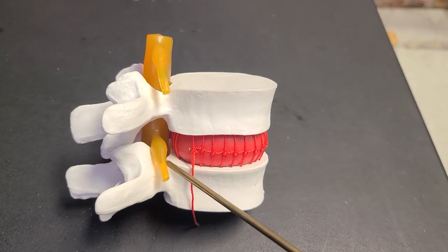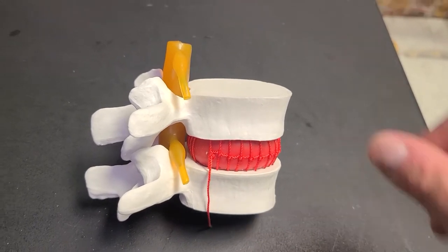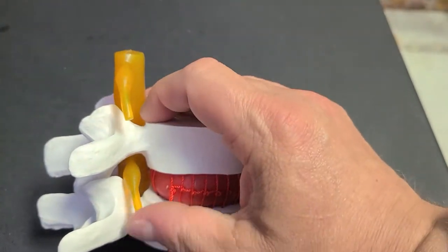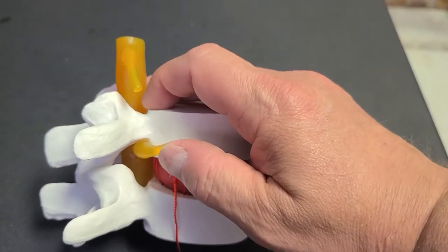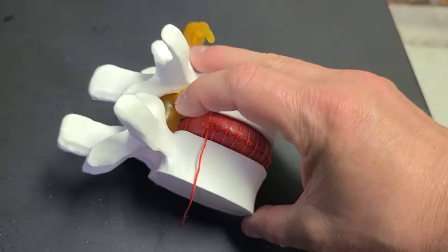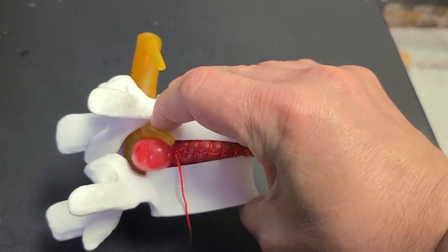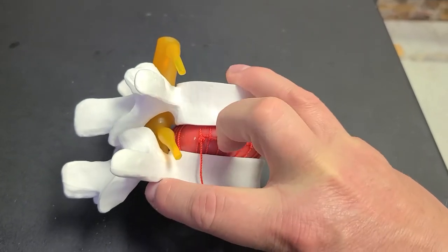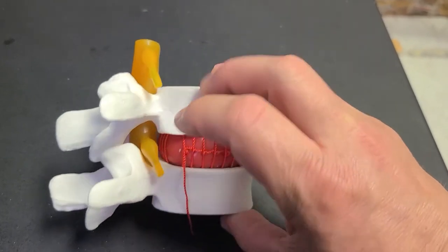If this is the nerve that's exiting at this level, in real life, these nerves exit near the top of that intervertebral foramen. So when it exits, this herniation doesn't really affect it as much as it affects the next nerve down, the one that would be, shall we say, at bat that's coming in this way.